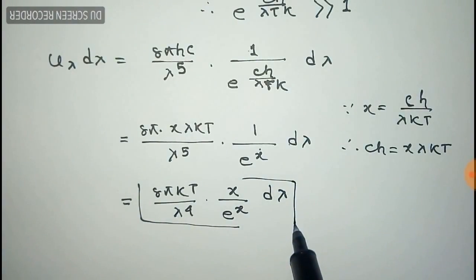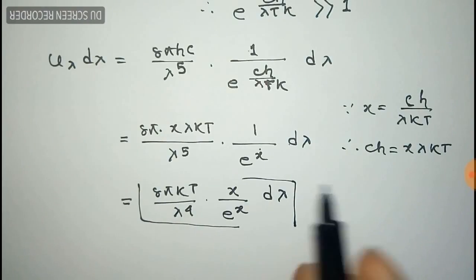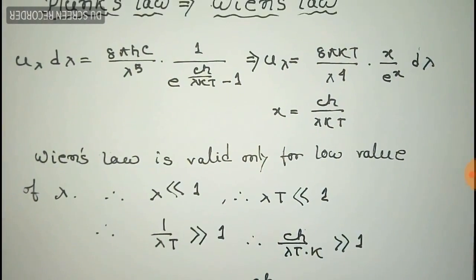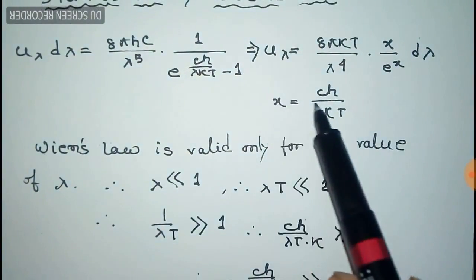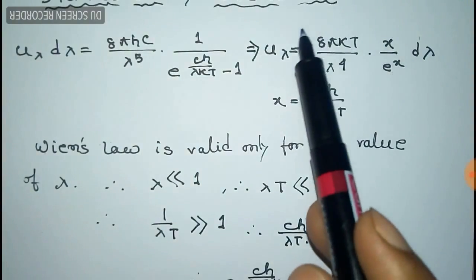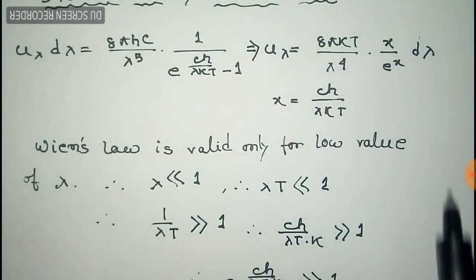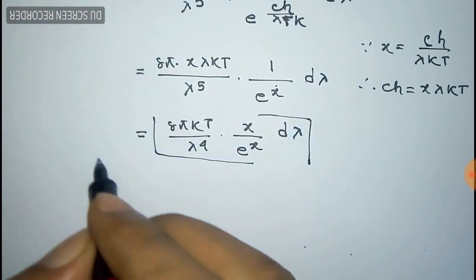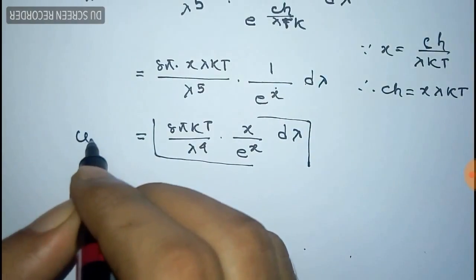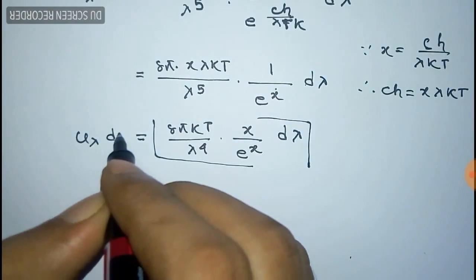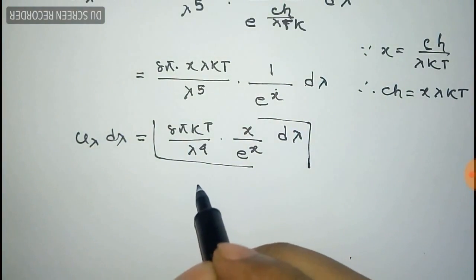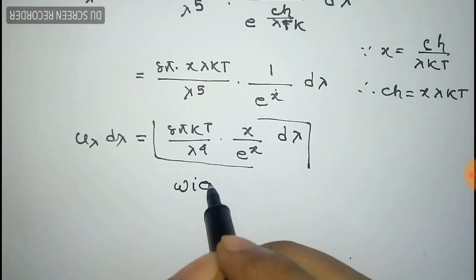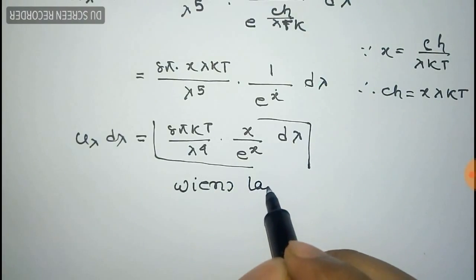And this is the so-called Wien's law, which we have derived from Planck's law. Thus we can derive Wien's law from Planck's law by this process. It is very simple to derive Wien's law from Planck's law.